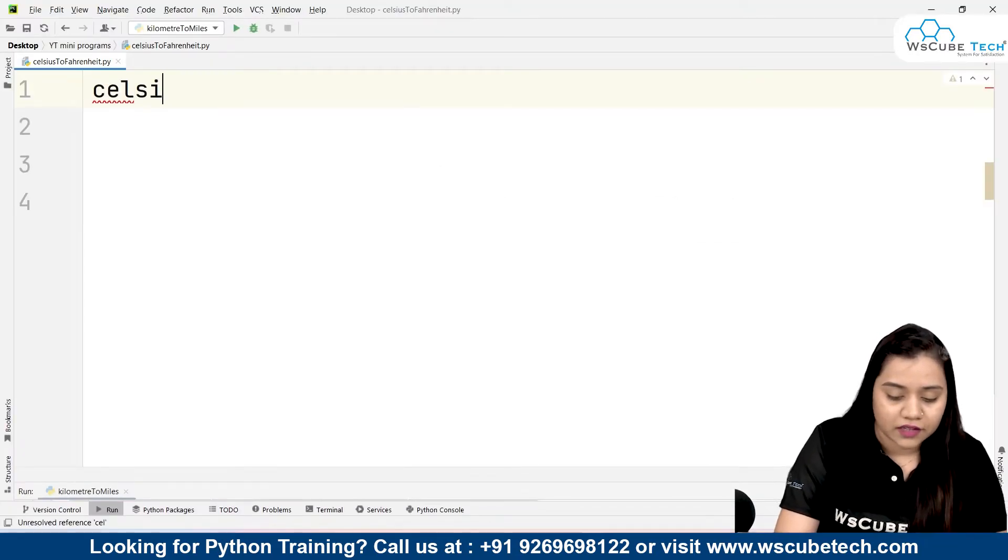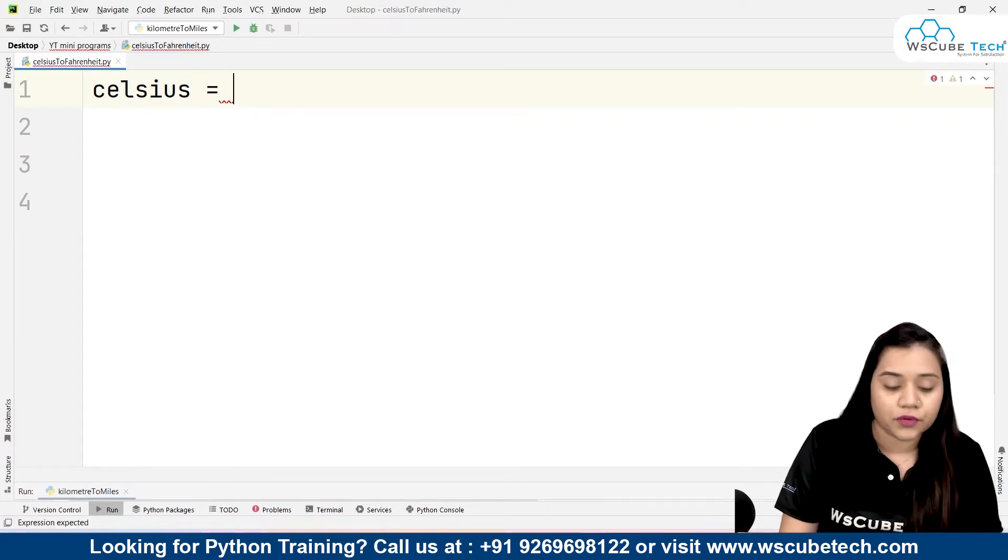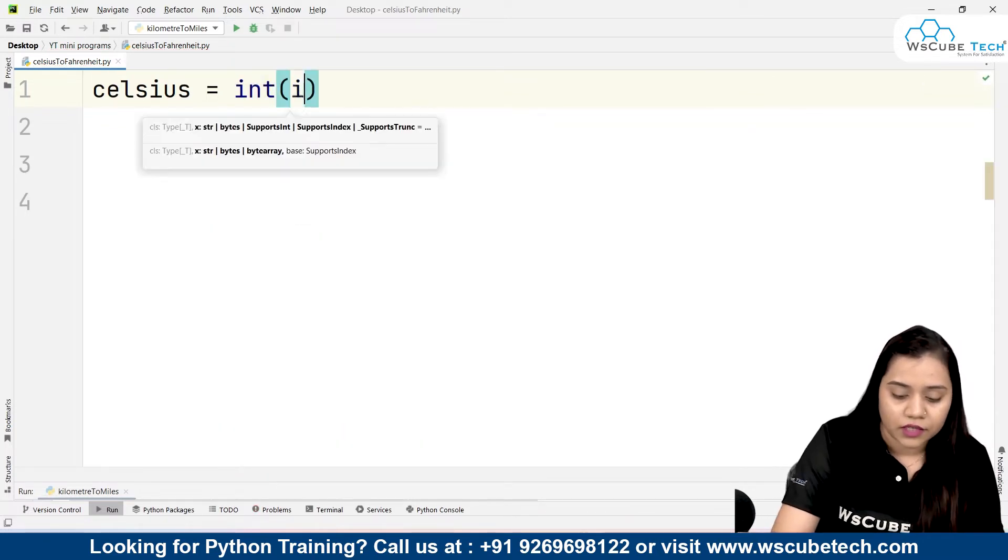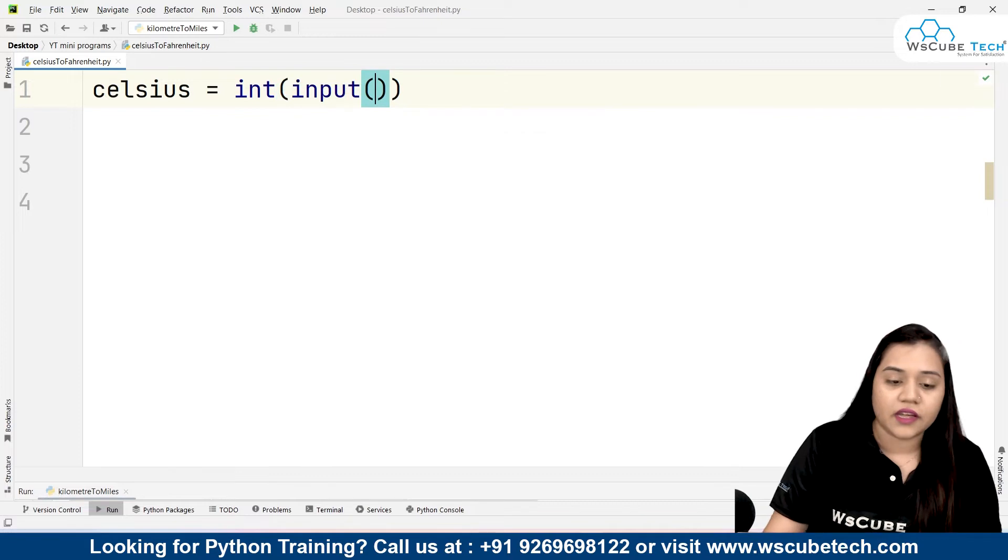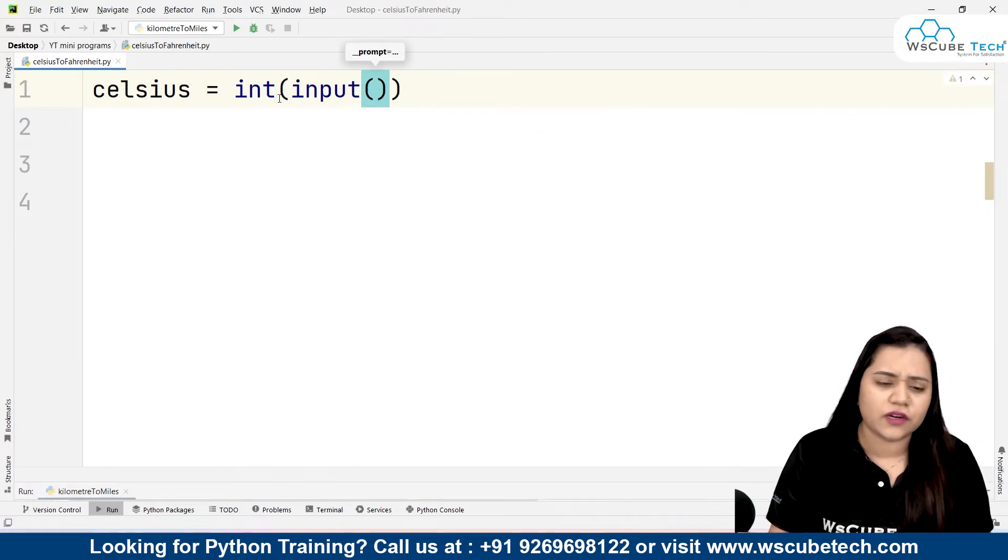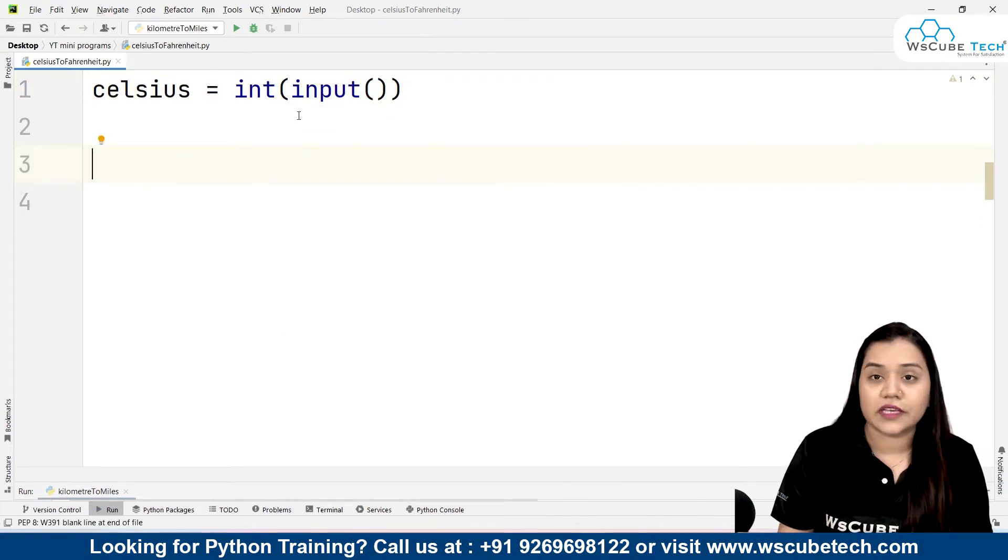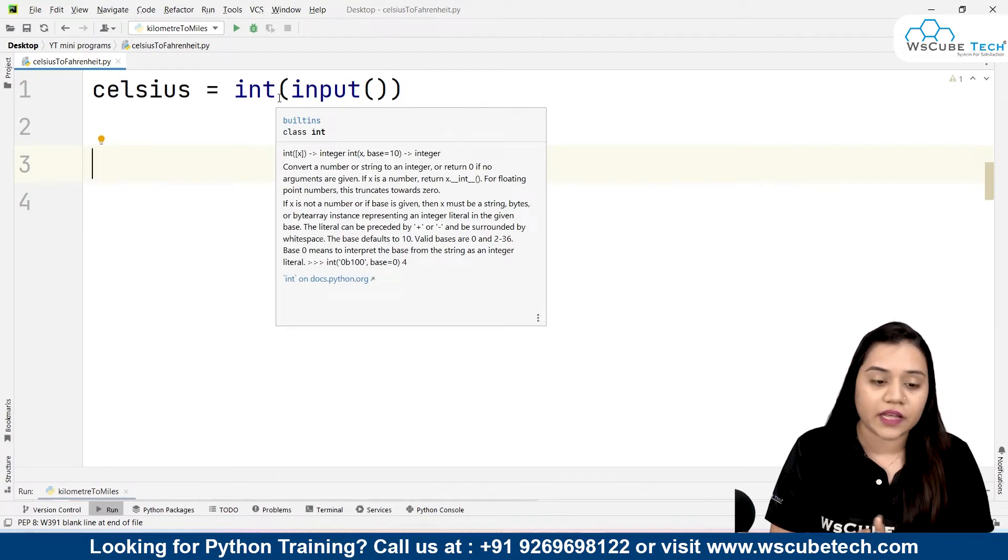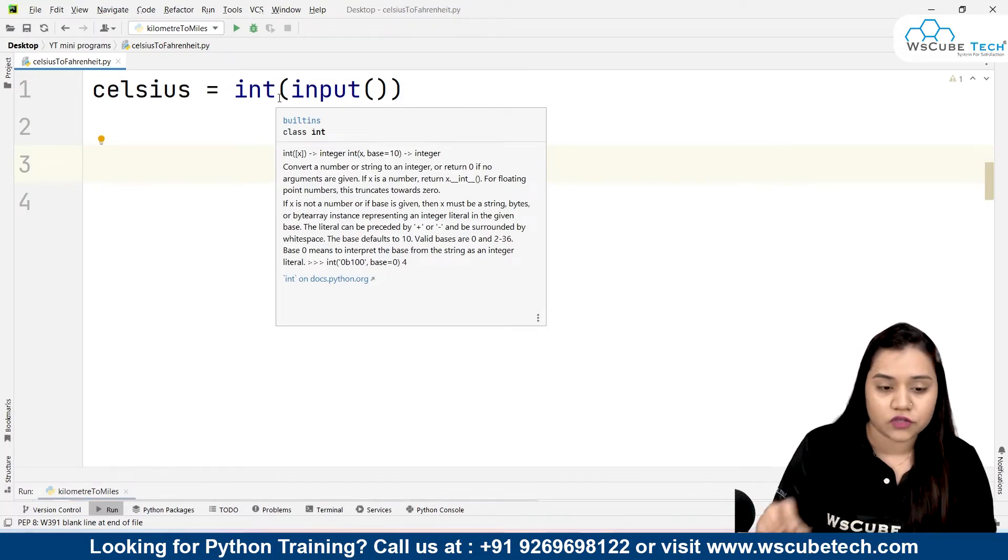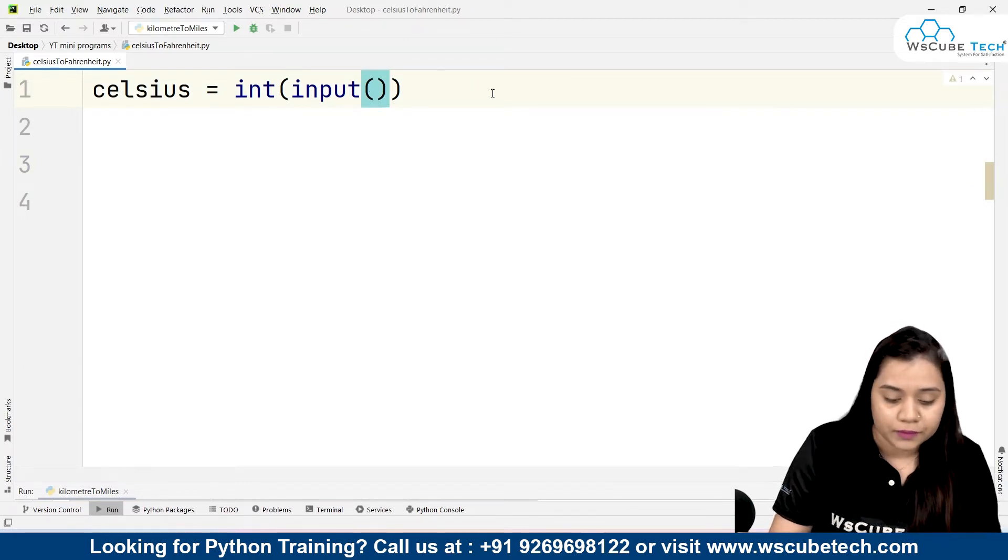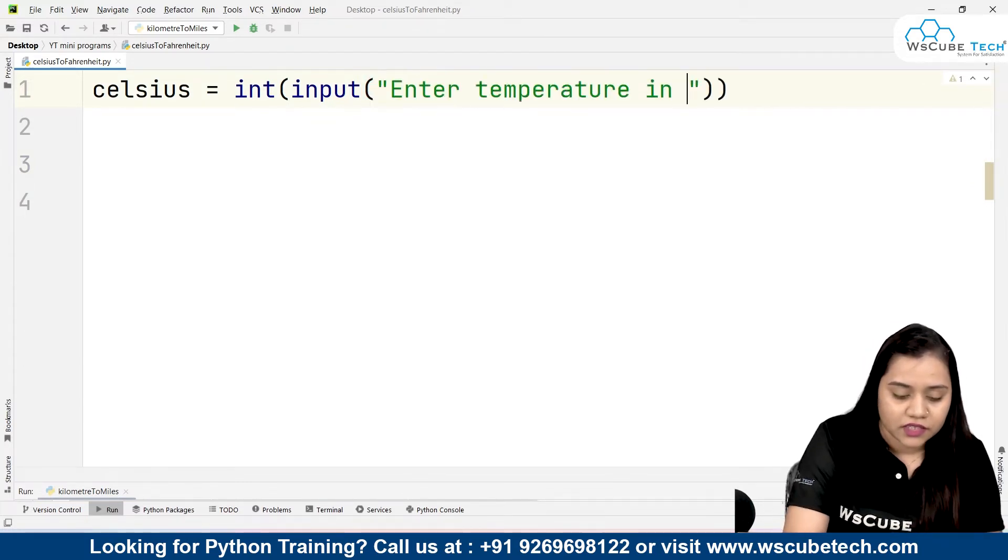So here first of all let's take a user input in Celsius. Now if you want you can take the input in integer also here, so int input. Remember to take an input in integer or a float value. Why I am saying so, because if you will not take it in the integer it will consider it as a string and then applying a mathematical formula to a string will generate an error. So all we need to do is write int input enter temperature in degree Celsius.